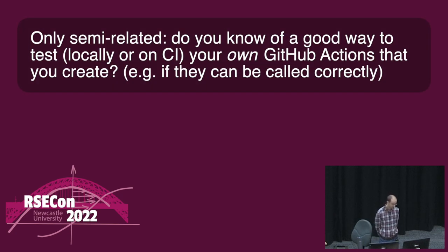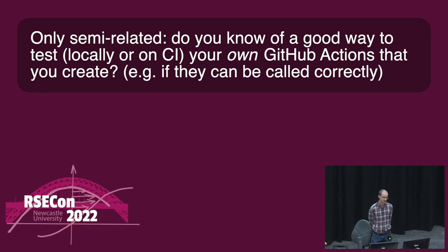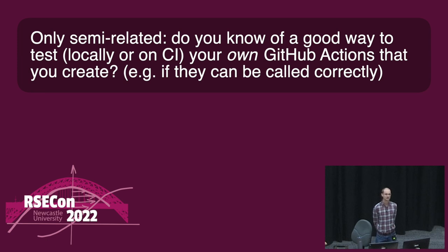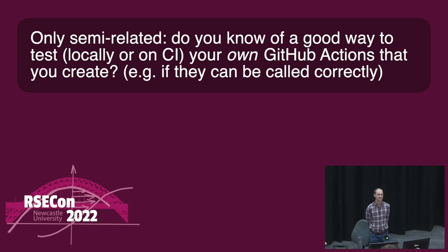Another question on Slido: do you know of a good way to test locally or on CI your own GitHub Actions that you create, if they can be called correctly? I'm not sure I understand the question — I think that's just what we did. The clarification: if you are creating your own GitHub Actions that other people can reuse in their own workflows, it's tricky to write tests for whether your code runs correctly or whether other people incorporating it in their workflows will get the result they expect. Good question — I have not thought about that yet. We are on the first layer, so I can't really speak to that.